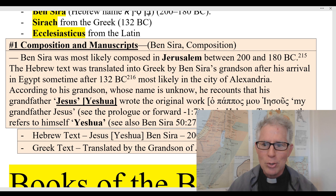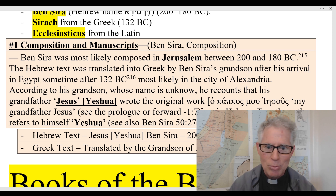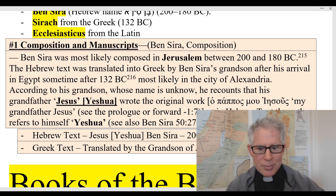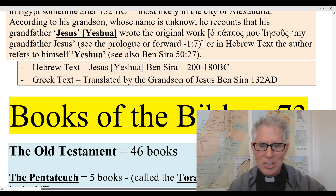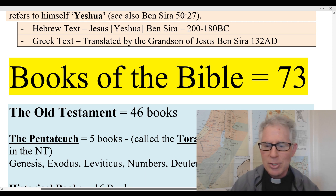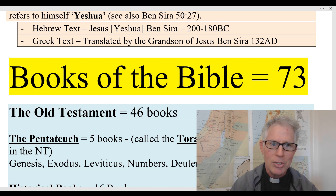In 132 B.C., probably around the city of Alexandria, Egypt — where the greatest library in the world was — the book was translated into Greek by the grandson of Jesus Ben Sirah, Yeshua Ben Sirah. He never tells us his name, but it's really amazing to consider. So first it's written in Hebrew, then it's translated into Greek two generations later by an unnamed grandson of Jesus Ben Sirah.